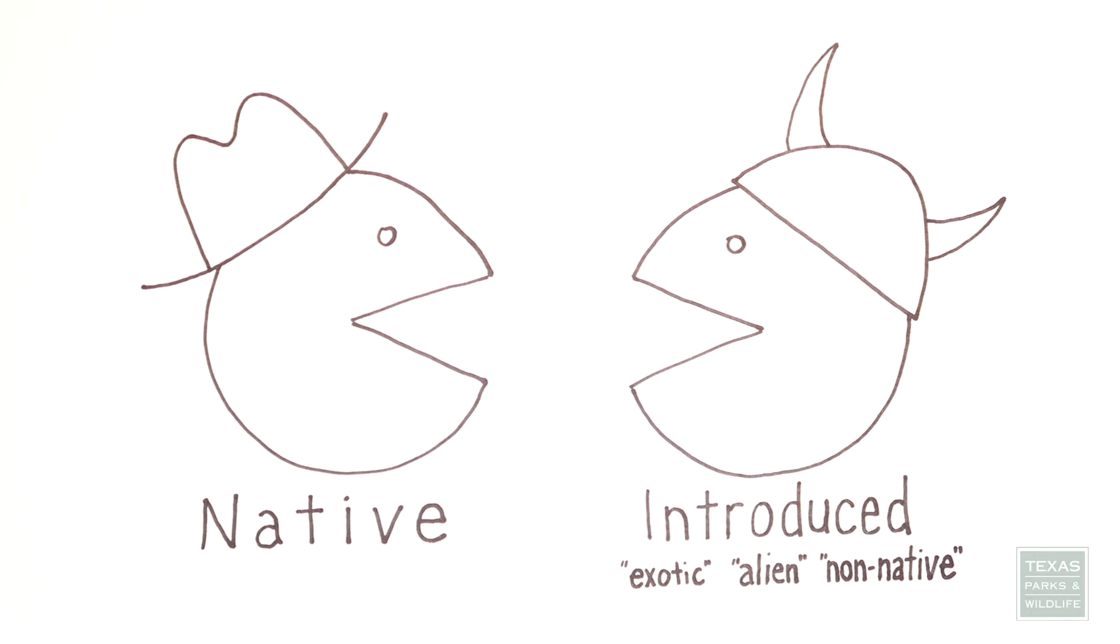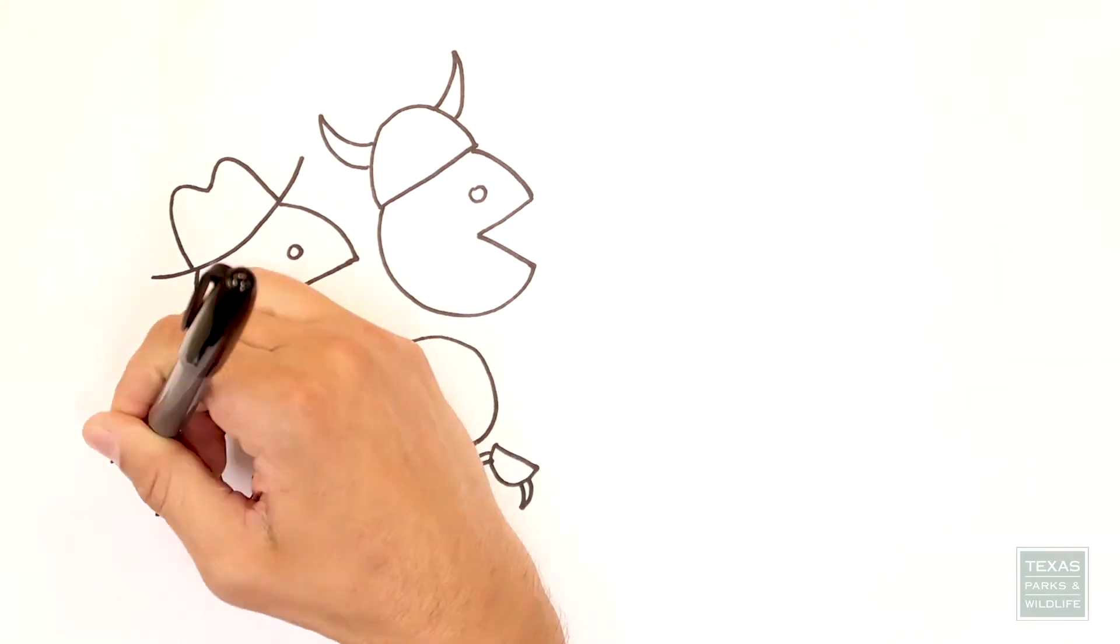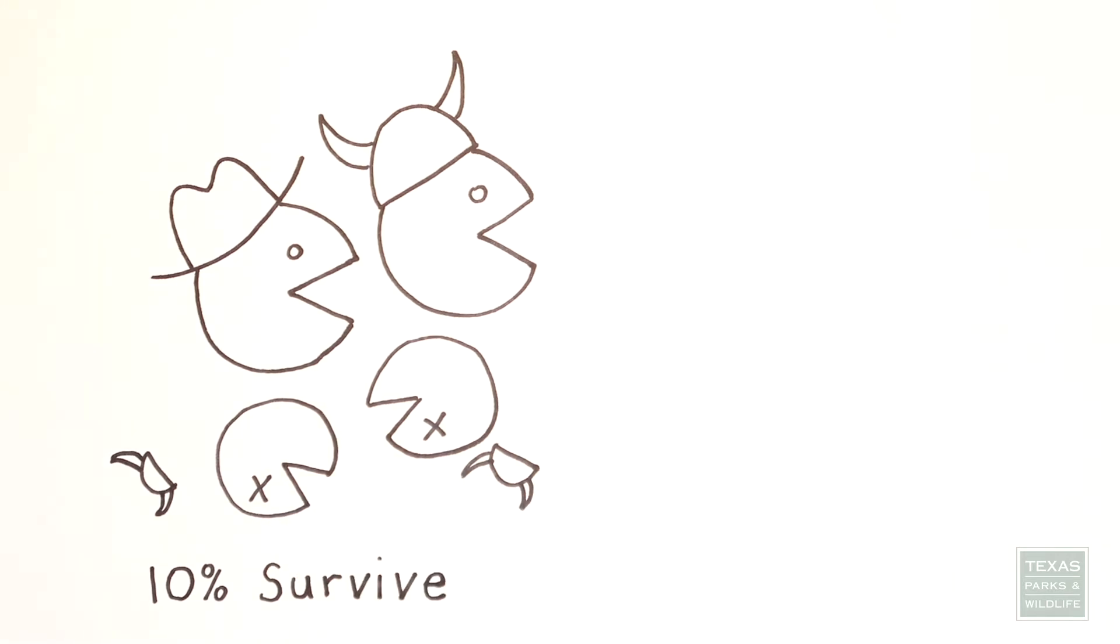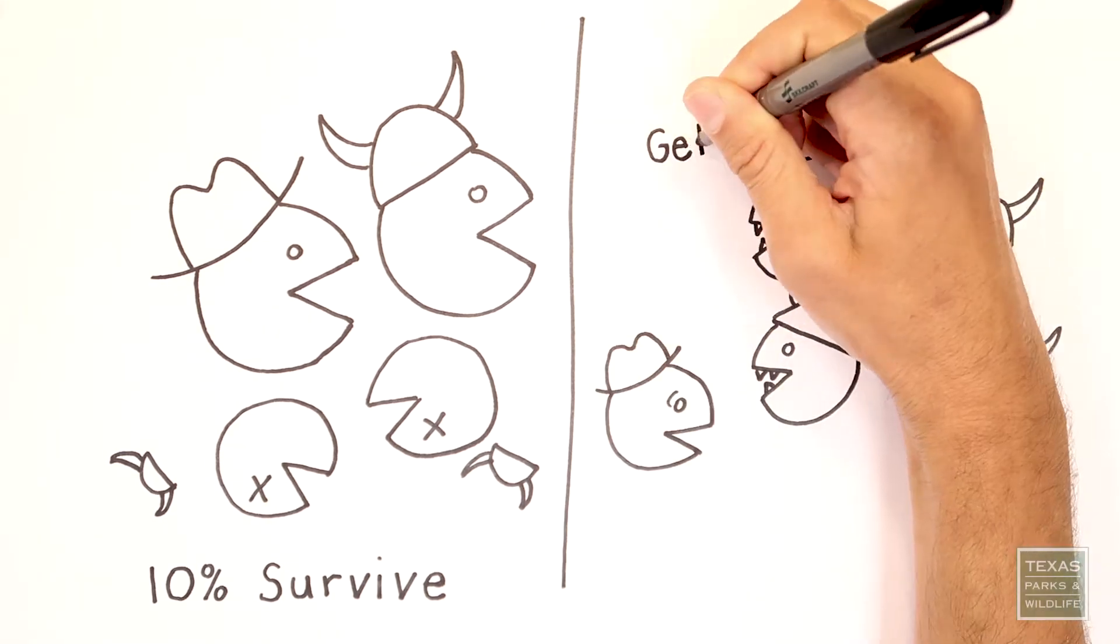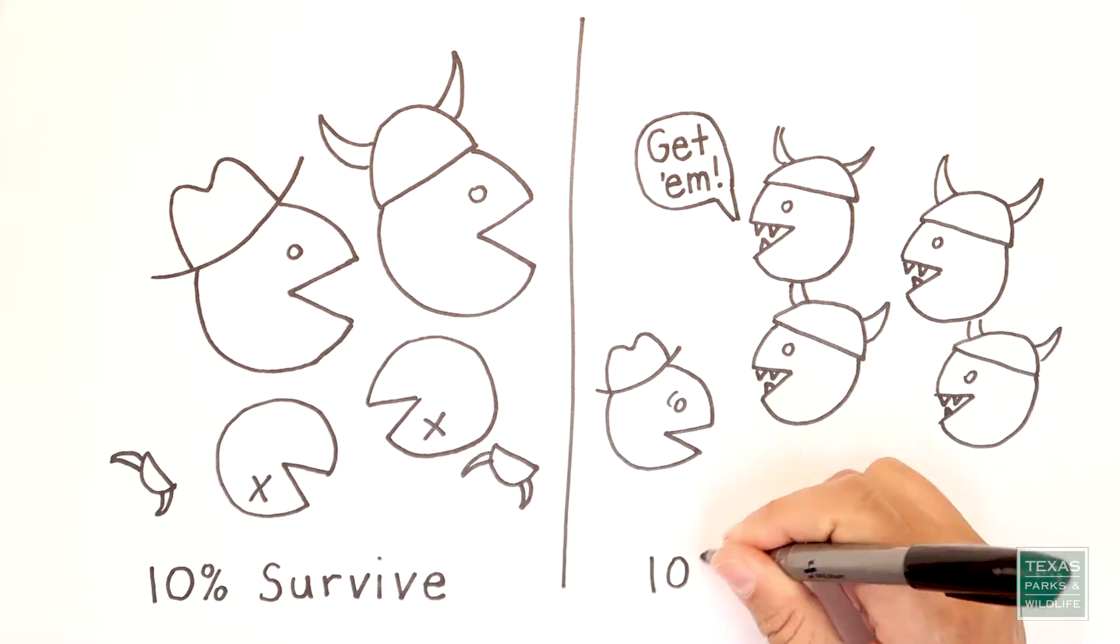Sometimes non-native species don't have much of an impact. In fact, only about 10% of exotic species survive in a new ecosystem. Of those that do survive, about 10% out-compete the natives, take their place, and become invasive.